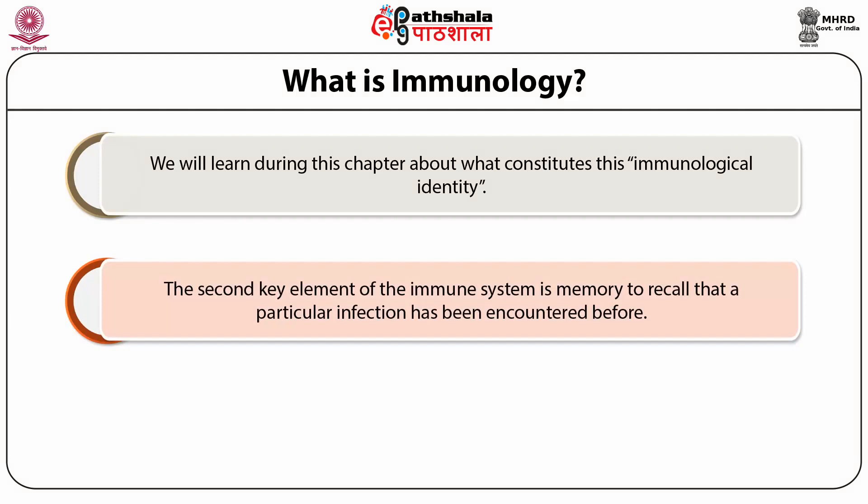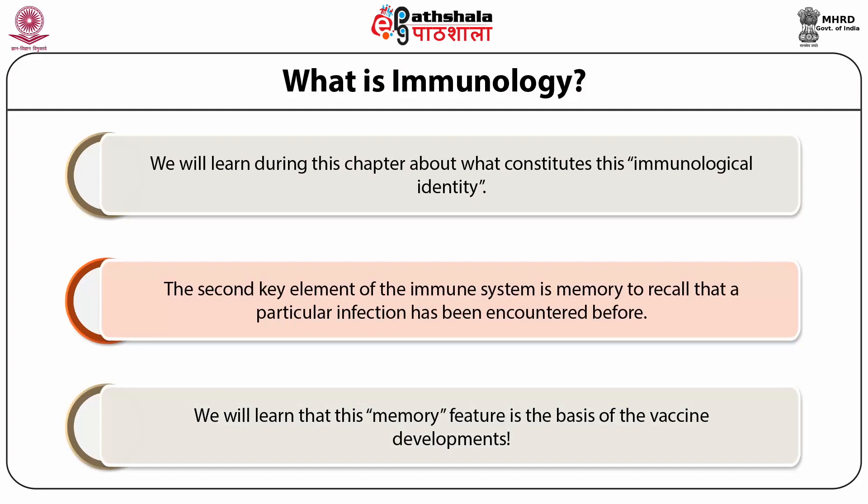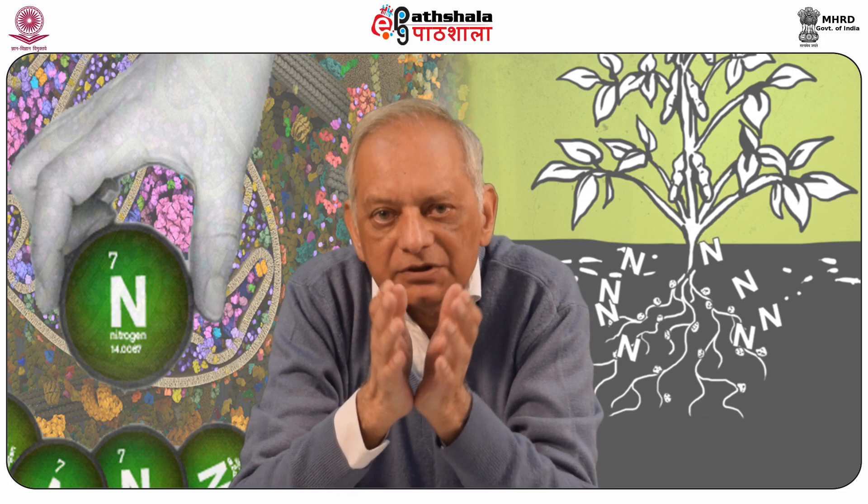The second key element of the immune system is a sort of memory to recall that a particular infection has been encountered before. Almost towards the end of this course, we will learn that this memory feature is the basis of vaccine development. The concepts covered in this module mostly relate to the contributions by various scientists in this area.